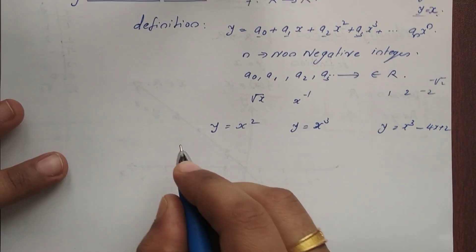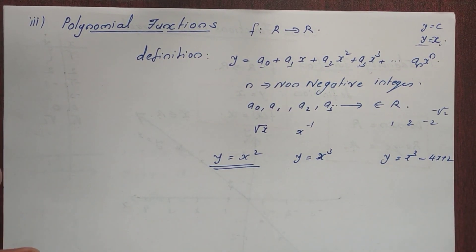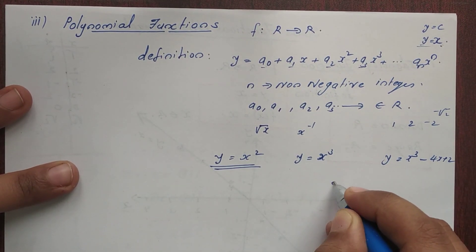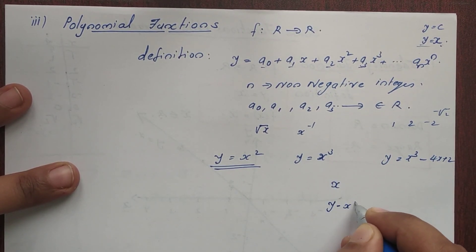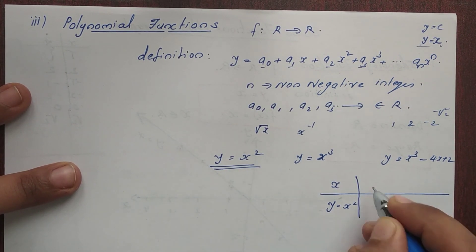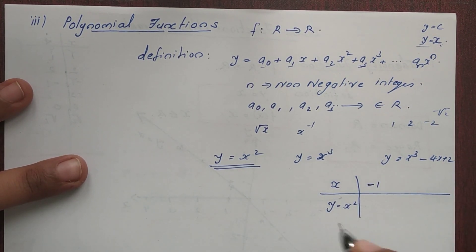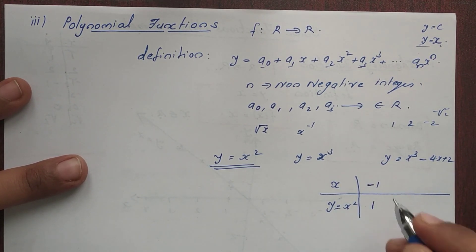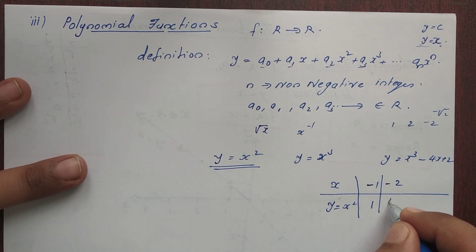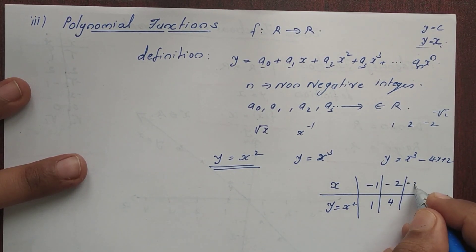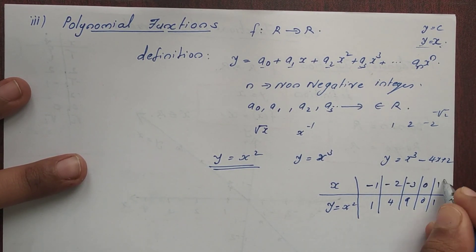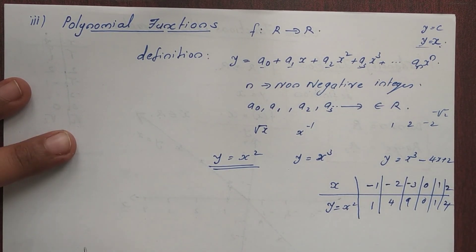Let's look at y = x². We'll build a table of x and y values. For x = -3: y = 9; x = -2: y = 4; x = -1: y = 1; x = 0: y = 0; x = 1: y = 1; x = 2: y = 4; x = 3: y = 9.